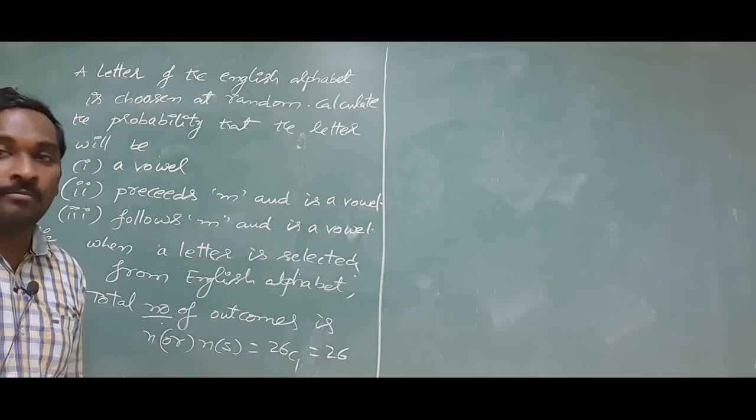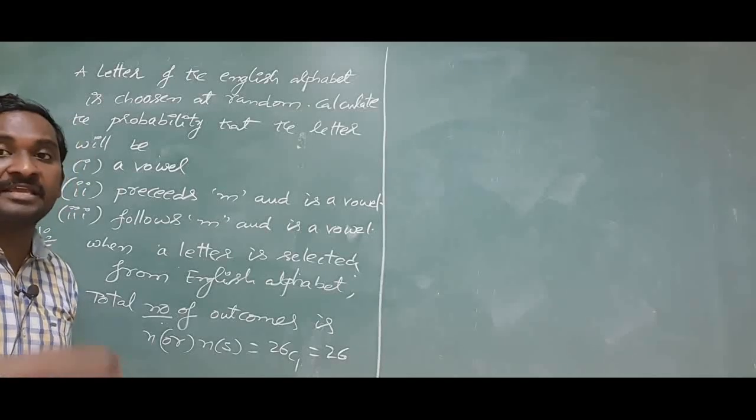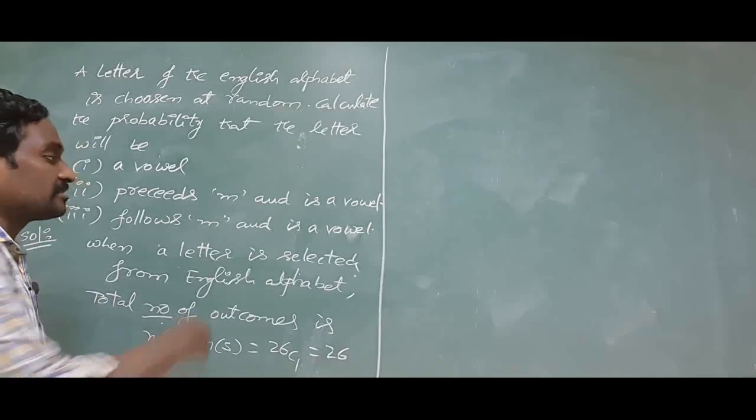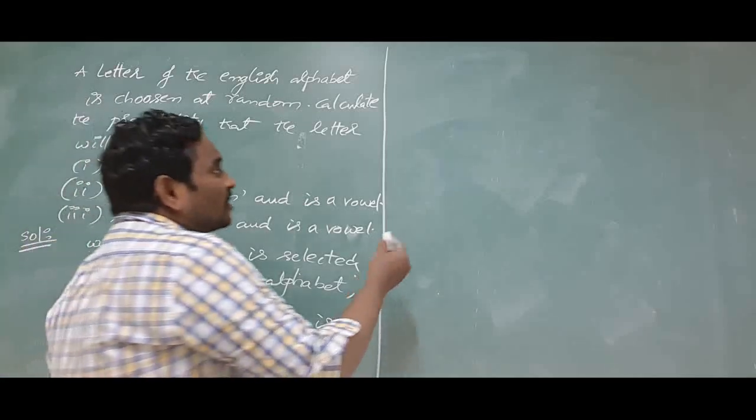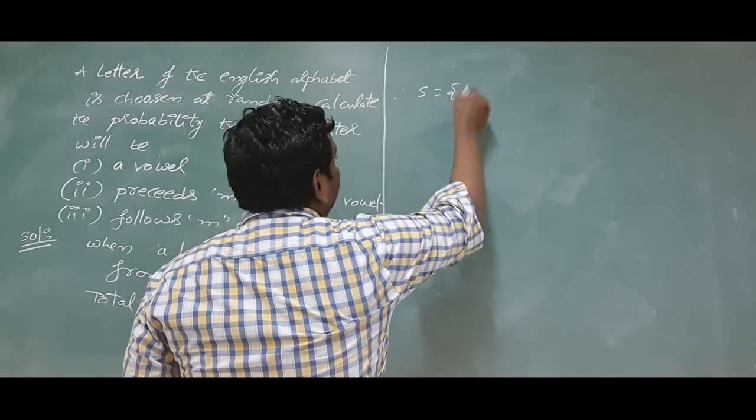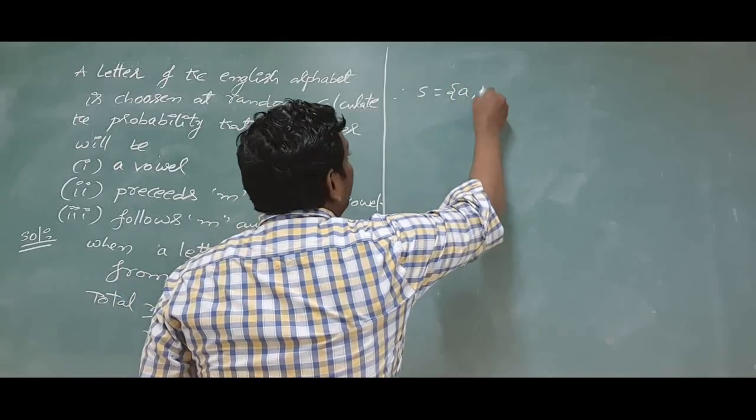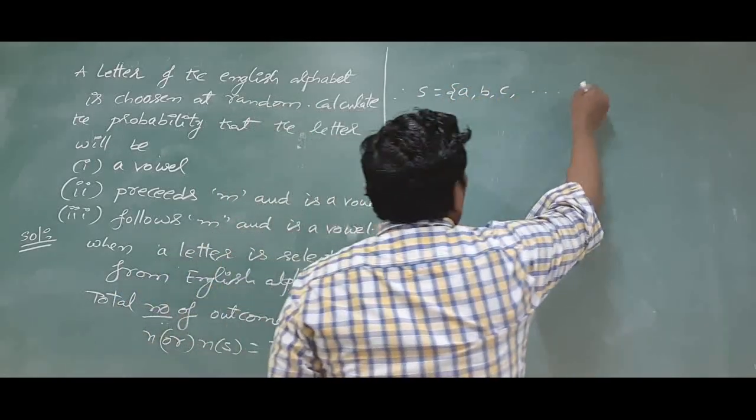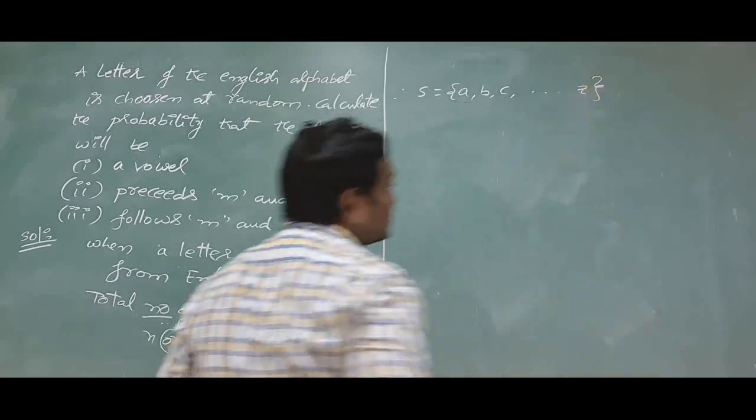26 C 1 is nothing but 26. There are 26 possible outcomes when we are selecting a letter from the 26 alphabets. It is not necessary to write the sample space. If you are interested you can write the sample space as you may get A, B, C up to last letter Z. This is the sample space.